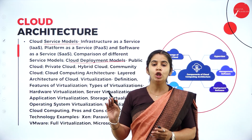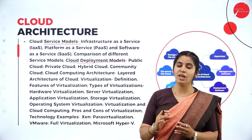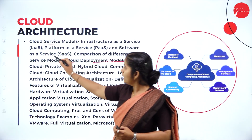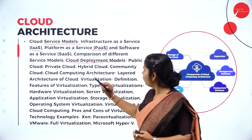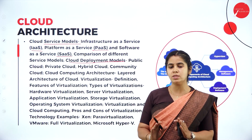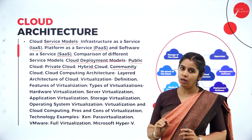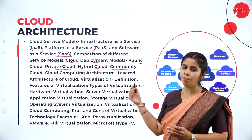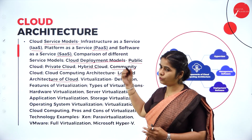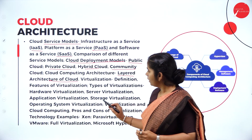In the service model, we are going to discuss three main services: infrastructure as a service, platform as a service, and software as a service. In the deployment model, we discuss the types of cloud: public cloud, private cloud, hybrid cloud, and community cloud. We will see the differences in detail when discussing module two in further sessions. Then we also cover the layered architecture of cloud, studying the different layers of cloud computing architecture.